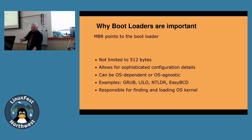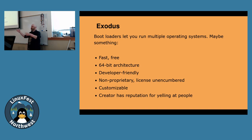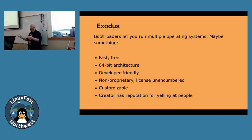All the bootloader does is find and load the kernel wherever it is told to go and look. By now you should be pretty comfortable understanding that bootloaders exist and they let you pick different OSes. So let's pick a different OS other than DOS or Windows. Let's get something that's fast, free, 64-bit — which would be great to run against DOS. I want something that's developer-friendly so I can write software for it, with coding tools, non-proprietary, licensed unencumbered, and able to be modified and customized.